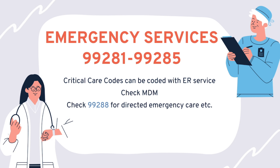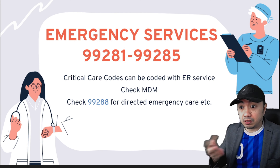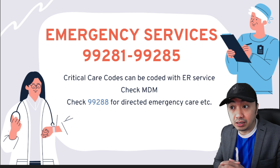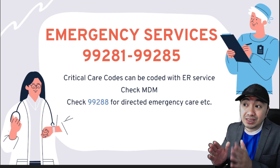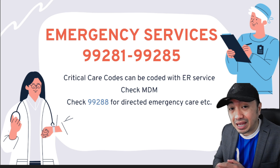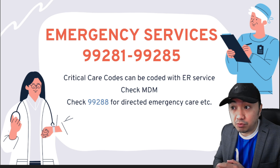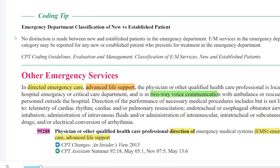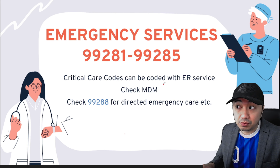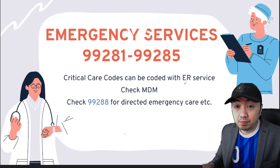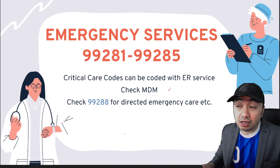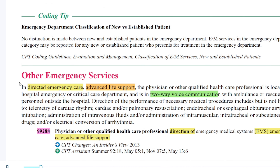The next type of service is emergency services, codes 99281 to 99285. If a patient is rushed to the ER and the ER doctor provides an E&M service, you code emergency services for that doctor. These codes are determined by MDM — not time. It's a bonus if the scenario gives you the MDM directly; otherwise, you calculate it. Also note that critical care codes can be coded with ER service. Check your book for specific guidelines, and take note of code 99288 for directed emergency care.